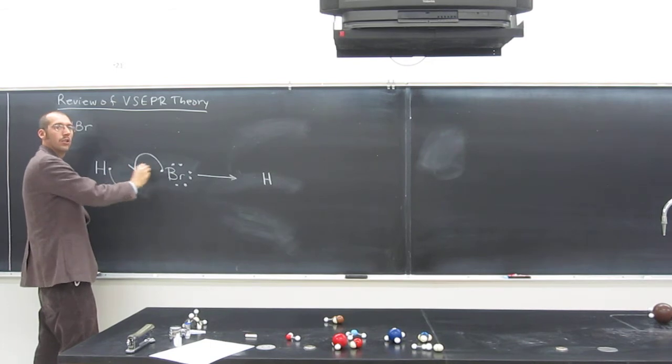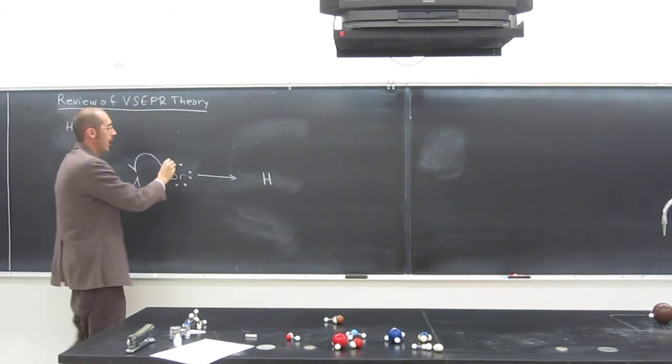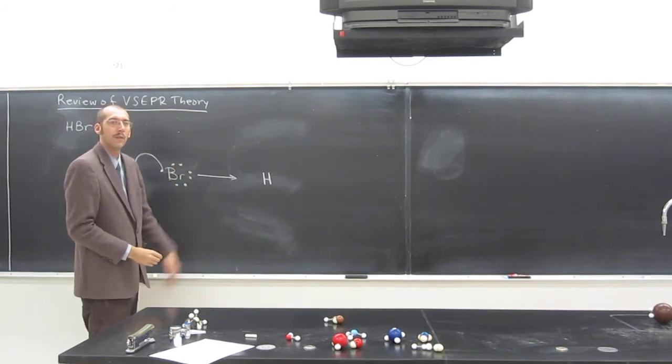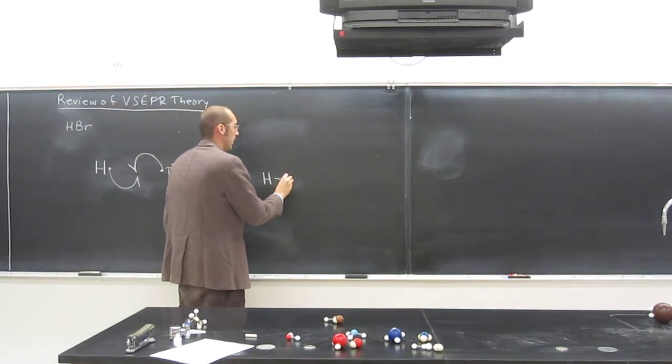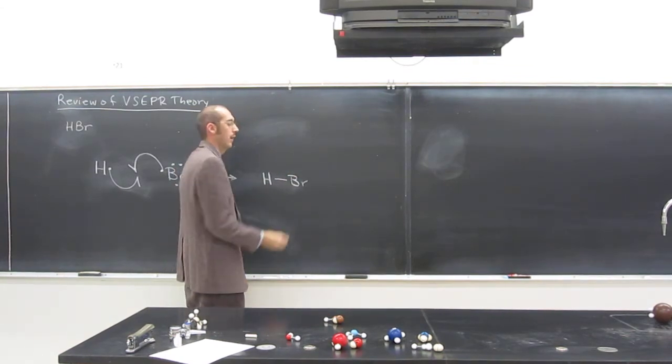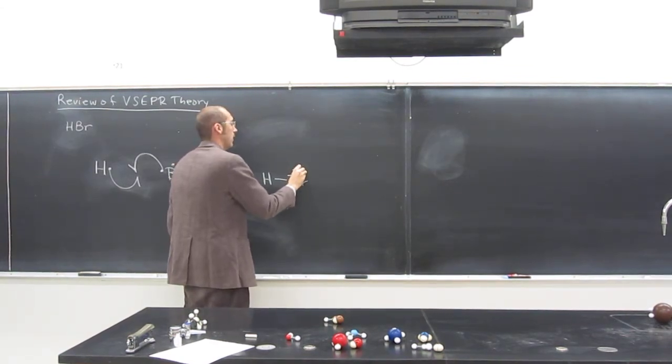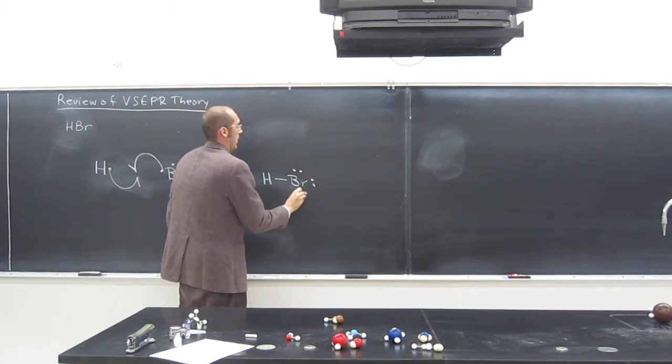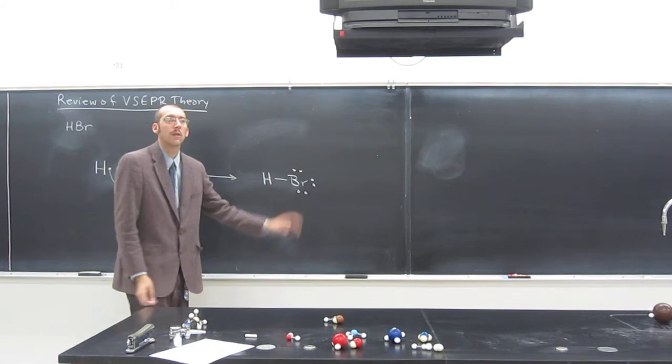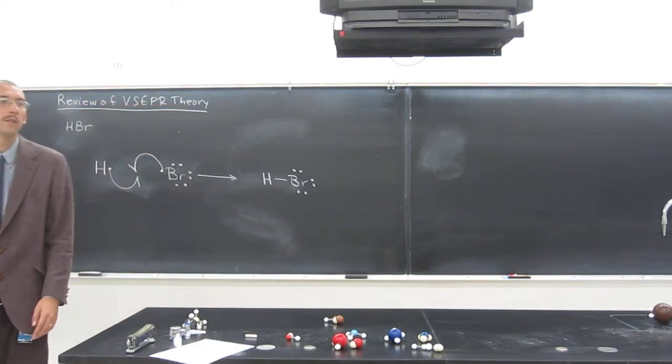when we show that sharing, we're going to show a line there. But the lone pair electrons, we just keep those as what they look like. So we've got the covalent bond there, Br, and it's surrounded by its six lone pair electrons, or its three pairs of electrons.